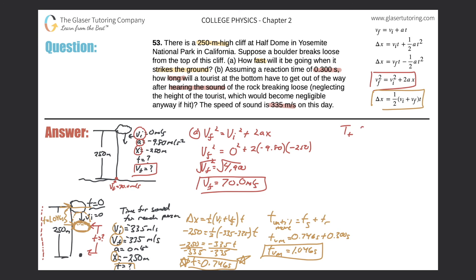Finding total time for the boulder to hit the ground: the initial position is at the top, the final is at the bottom. The initial velocity of the rock is zero meters per second; it's in free fall so acceleration is negative 9.80 meters per second squared; and the rock has to travel a displacement of negative 250 meters.